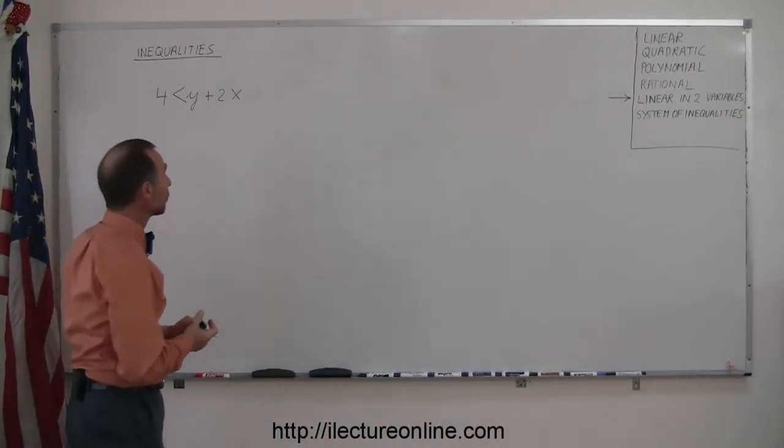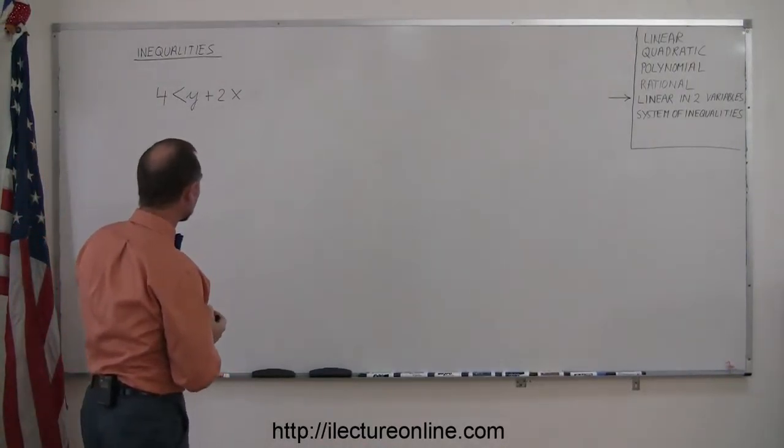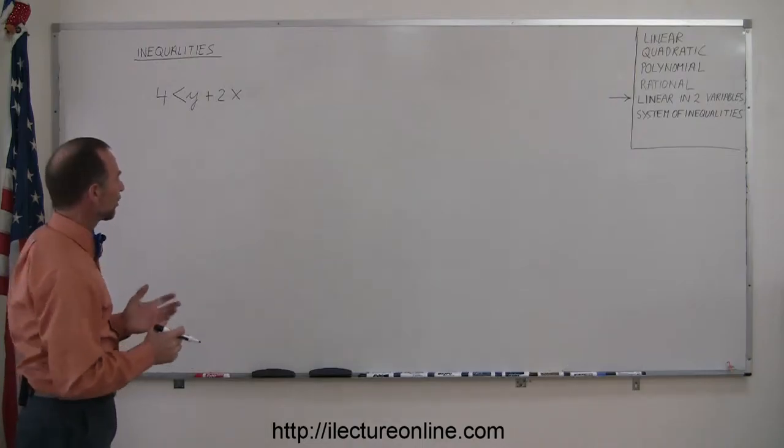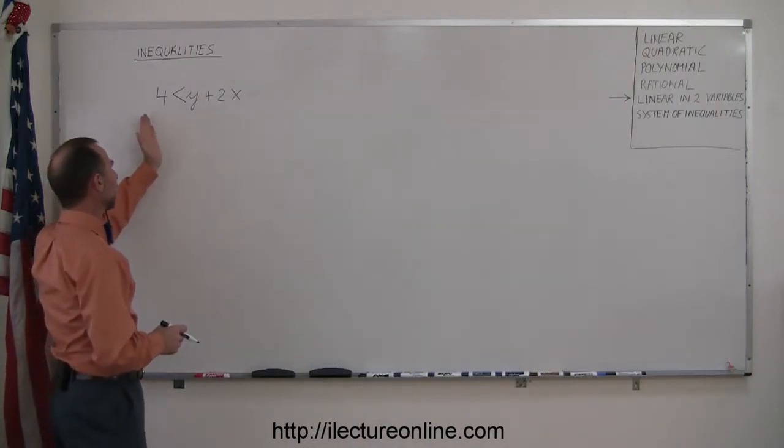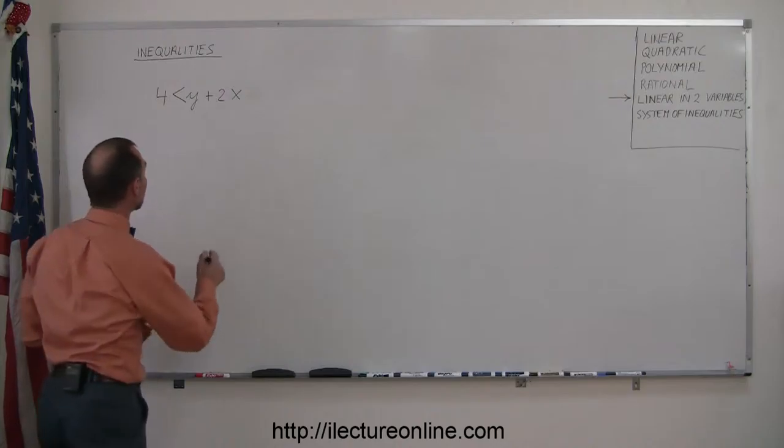Here's another example of how to solve a linear inequality in two variables. Now notice that it's not in your standard form. You would like the y on one side and everything else on the other side, so I'm going to rewrite this inequality.